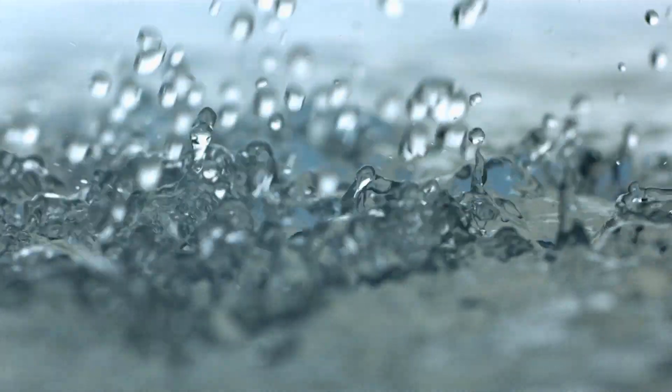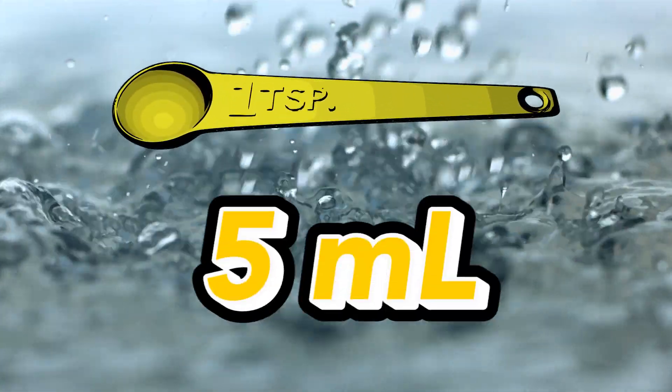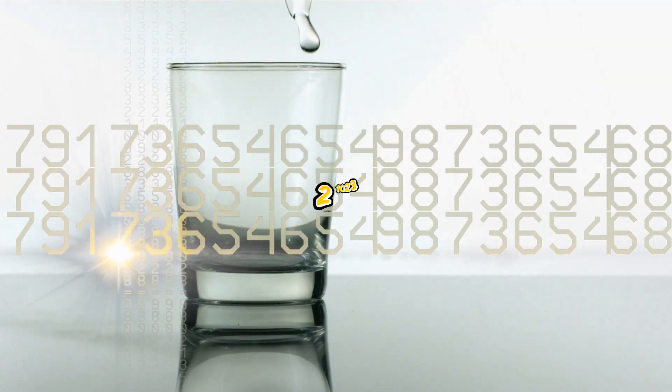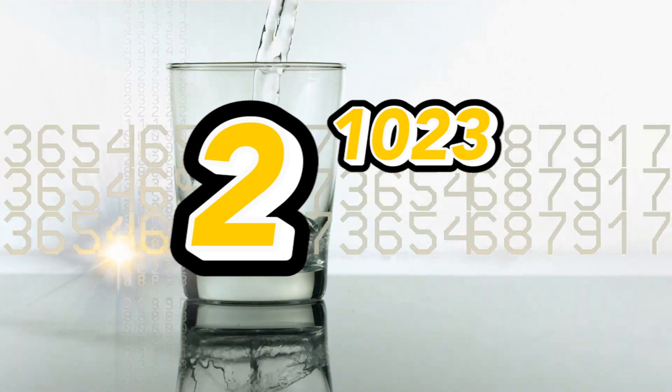When you take a look at the size or volume of a teaspoon of water, it comes out to about five milliliters. When you do the calculations, that means that it contains two to the power of 1,023 water molecules.